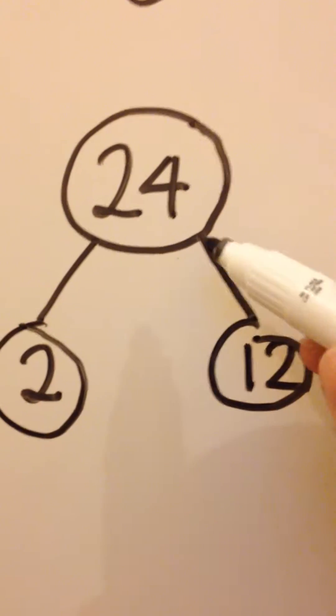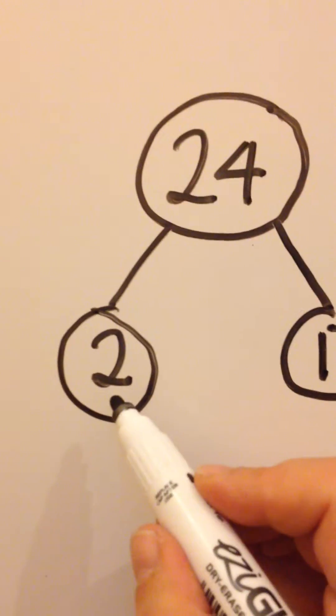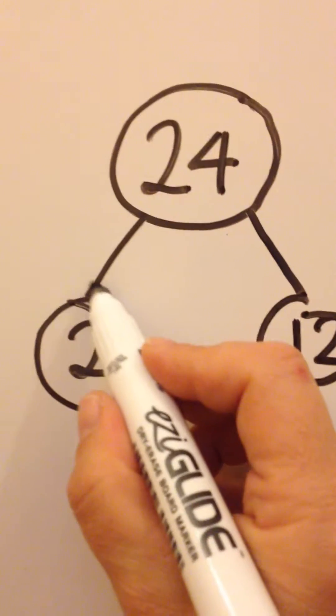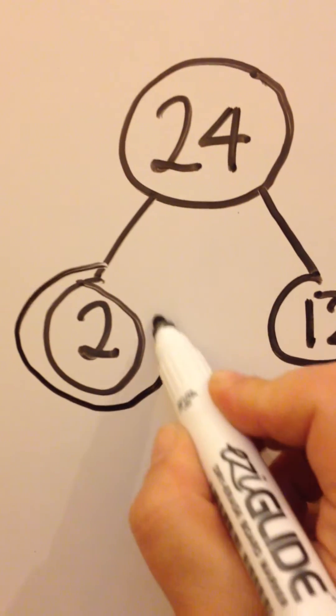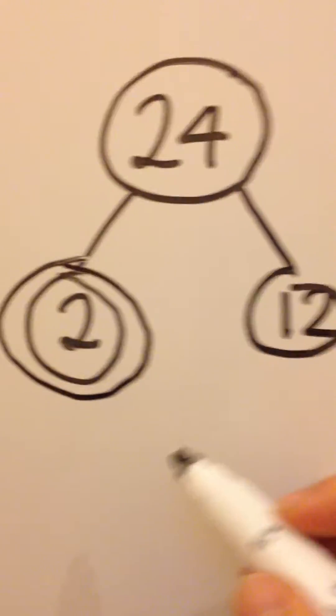When you branch the number into two factors, if you get a prime number on one of the ends, put a double circle around it. That's like a dead end. You can't go any further down that branch.